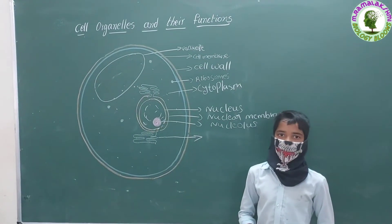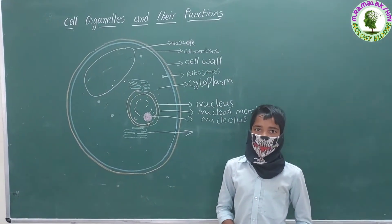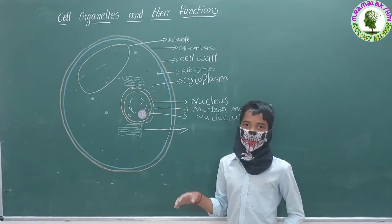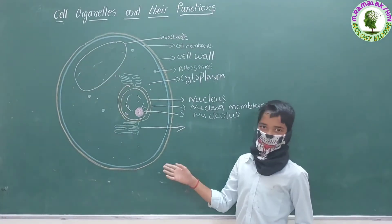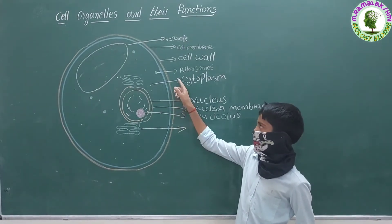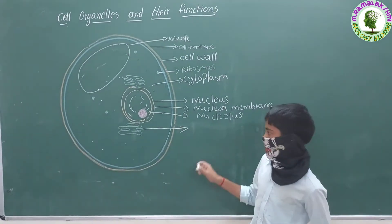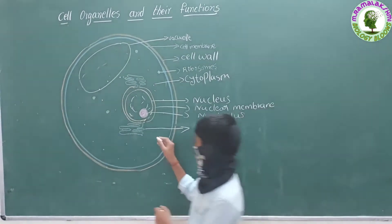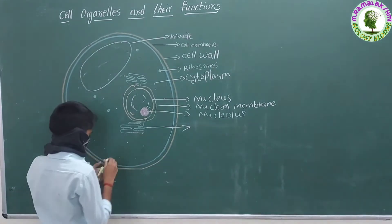I am endoplasmic reticulum. I am a large network of membrane-bound tubes and sheets. My structure is similar to the plasma membrane. I function both as a passageway for intracellular transport and manufacturing surface. I am of two types.